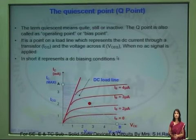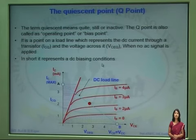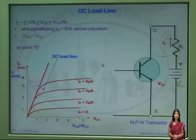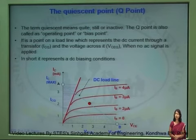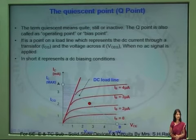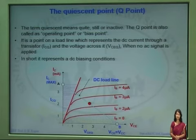Now let's start with the concept of the quiescent point. The quiescent point is called a still point, inactive point, or stable point, and it is also called the operating point or biasing point. It is a point on the DC load line which represents the collector current flowing through the circuit and the collector-to-emitter voltage across the transistor.